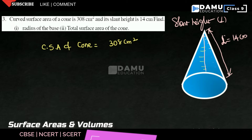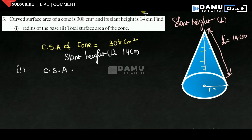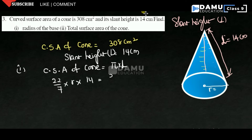First, find the radius of the base. The slant height capital L equals 14 cm. The curved surface area formula is: curved surface area of cone = π R L. Let us substitute the values: 22/7 × R × 14 = 308.